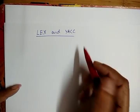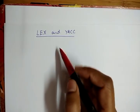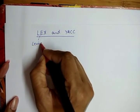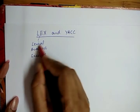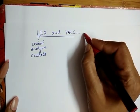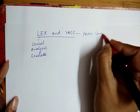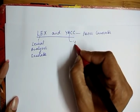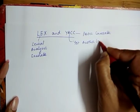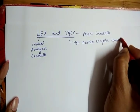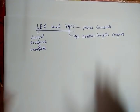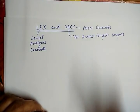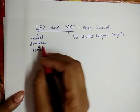Today we are going to discuss our next topic: Lex and Yacc. Lex stands for lexical analyzer generator, which is used in the first phase — lexical analysis. Yacc is a parser generator used in the second phase of the compiler, and it stands for yet another compiler compiler. We will discuss how these two tools work and how they help in generating tokens and a parse tree.